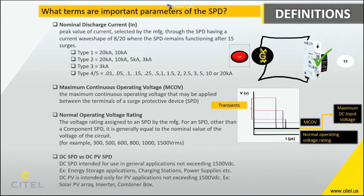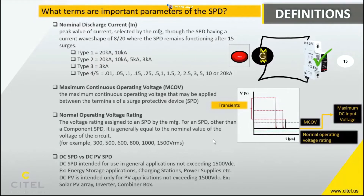It's important to make sure you have the right certification, as failure tests differ between DC SPD and DC PV SPD. DC SPD certification is required for applications like EV charging stations, energy storage systems, DC rail, or DC power supplies. If you have a solar array, inverter, or string combiner box, you need a DC PV SPD certification from UL.